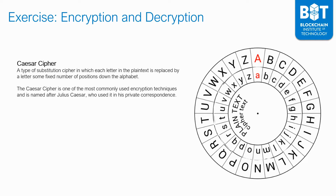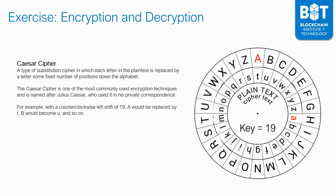As some background, Caesar ciphers have been around since as far back as Julius Caesar, who used it in his private correspondence, and it was extremely well used for a very long time. In this example, if we turn the wheel 19 positions counterclockwise, you replace the letter A with a lowercase t, B becomes U, and so on. This is what's known as a key of 19 — we are moving the Caesar cipher 19 places counterclockwise. Now we've got our decryption mechanism.